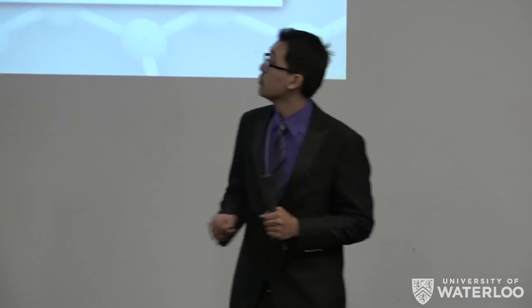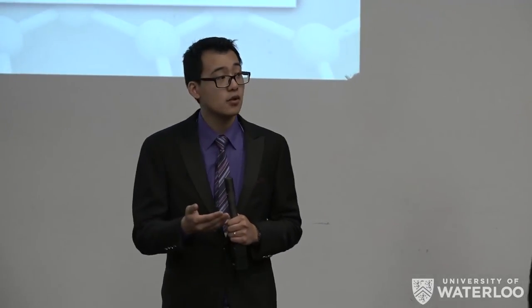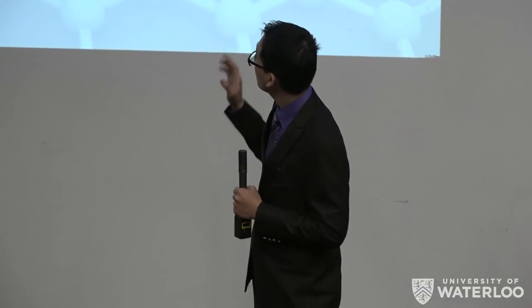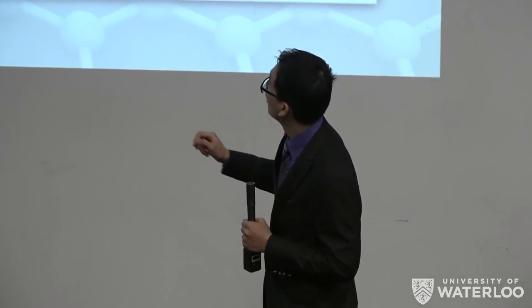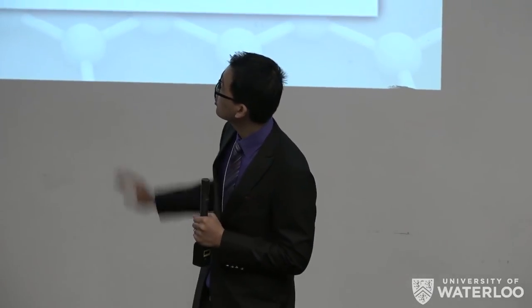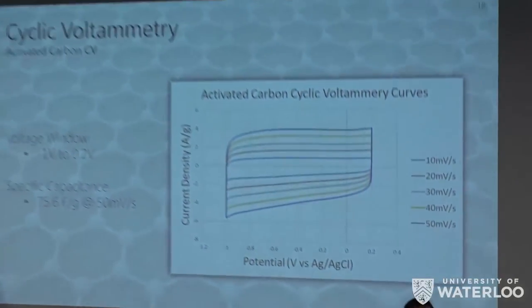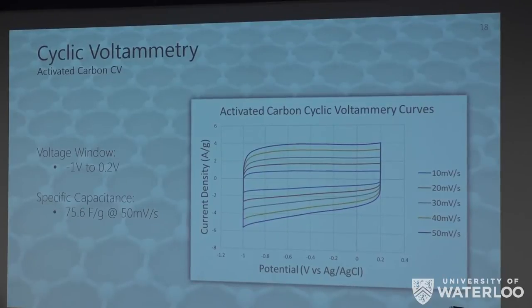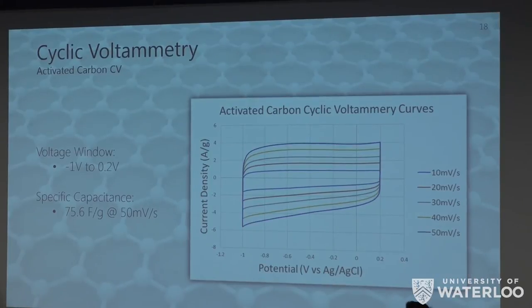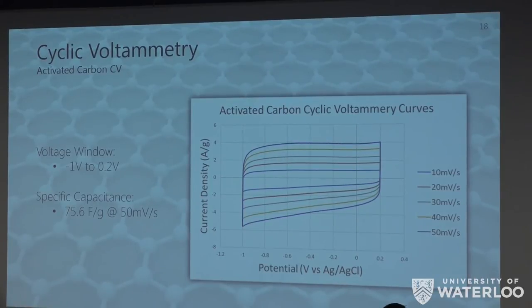Next is our anode material. We find that it's stable from negative 1 to positive 0.2 volts, again confirming that we have a good anode material. Notice how rectangular the shape is. That's what we want. That indicates that it's really good at fast charging and discharging. Also notice that the normalized current density on average is 4 amps per gram. If you do electronics, you know 1 amp is a lot of current. This is typical for supercapacitive materials. Here we see that the specific capacitance is greater at 75.6 farads per gram, again at 50 millivolts per second.